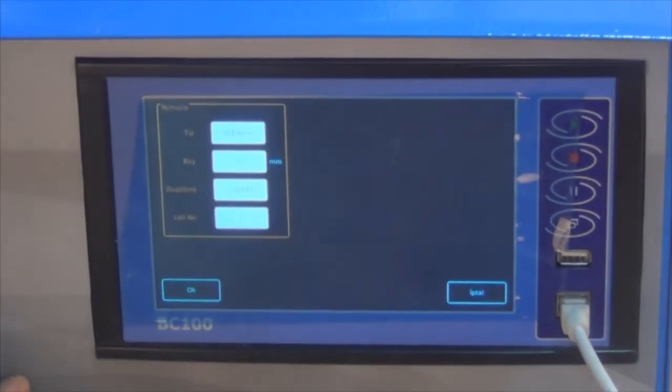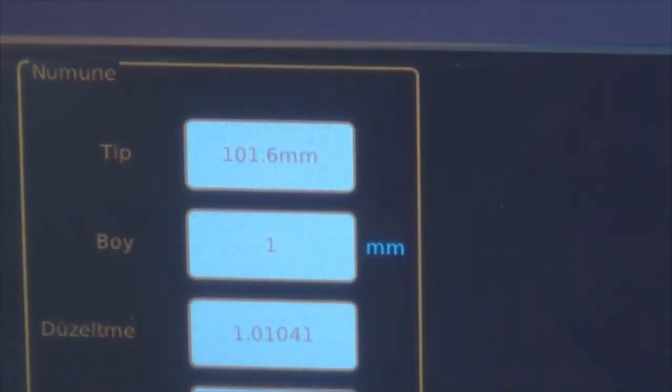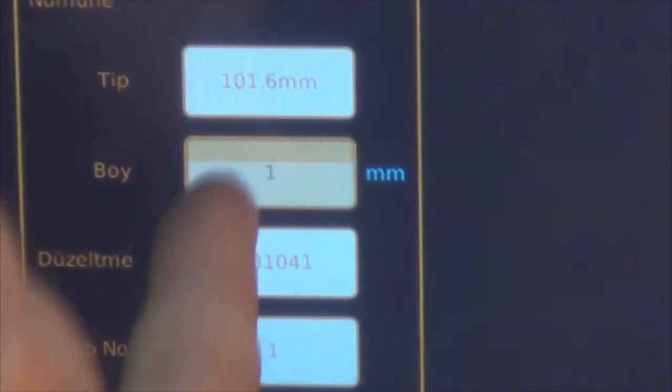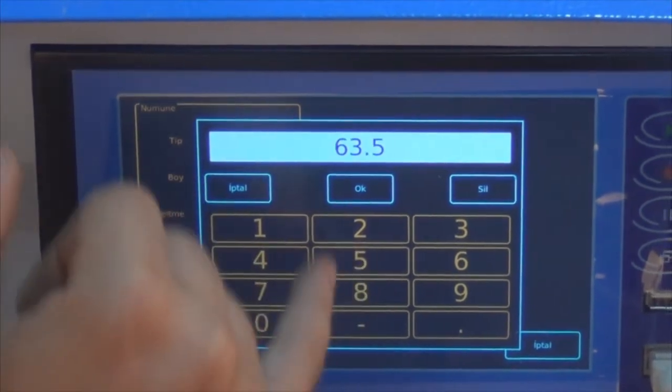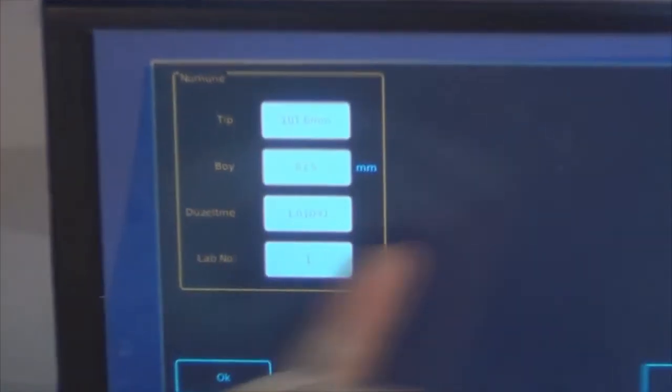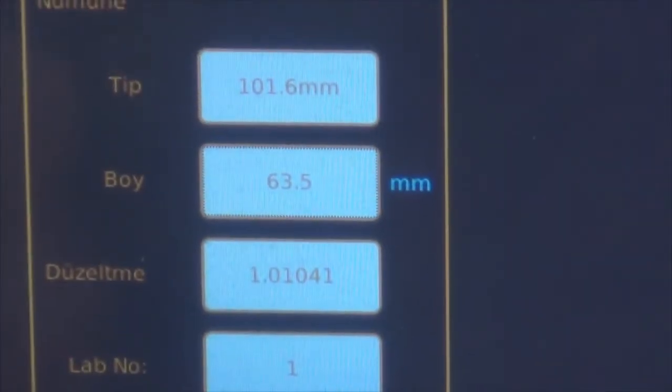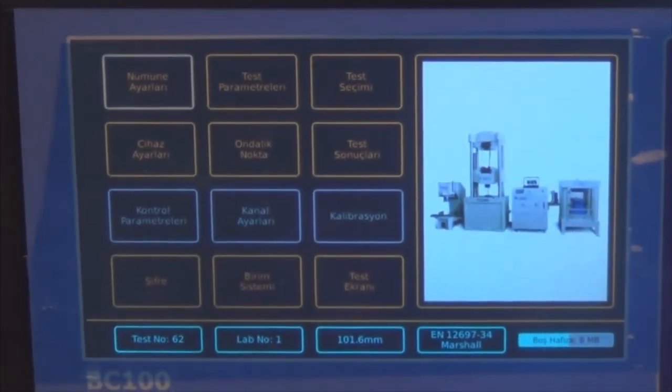In the first menu we have type. Since we are using a 4-inch specimen, it is 101.6 mm. From here we insert the thickness of this specimen, which is 63.5 mm. The correction factor is displayed as almost 1. After that we press the OK button so that the parameters are recorded.